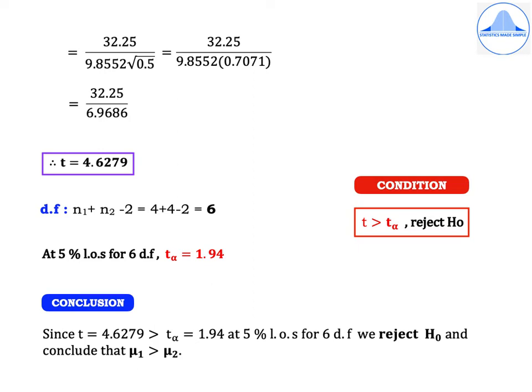The degrees of freedom is N1 + N2 − 2 = 4 + 4 − 2 = 6. The condition for a right-tail test: reject H0 if T > T-alpha. At 5% level of significance for 6 degrees of freedom, T-alpha = 1.94. Since T = 4.6279 is greater than T-alpha = 1.94, at 5% level of significance for 6 degrees of freedom, we reject H0 and conclude that mu1 is greater than mu2.